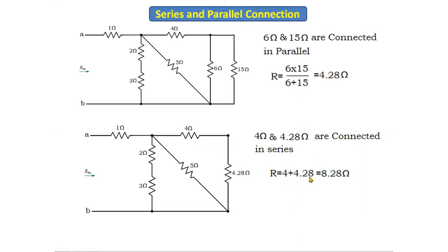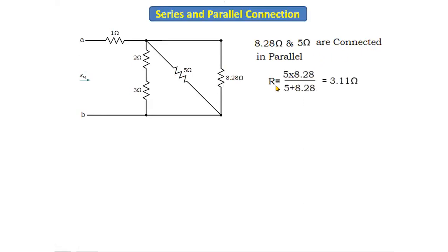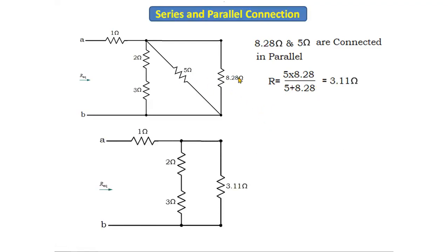Now the 5 ohm resistor and the 8.28 ohm resistor are connected in parallel. Applying the parallel operation: R = (5 × 8.28) / (5 + 8.28) = 3.11 ohms. We replace these two resistors with one single resistor of 3.11 ohms.